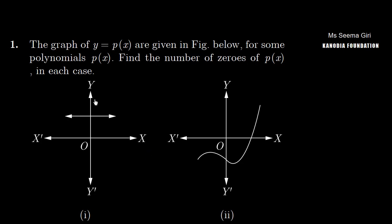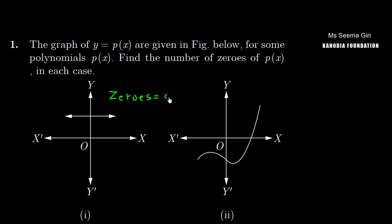In each case, we have a graph and one line parallel to the x-axis. In the first graph, we have one line parallel to the x-axis and it does not intersect at any point — it means it has zero zeros.